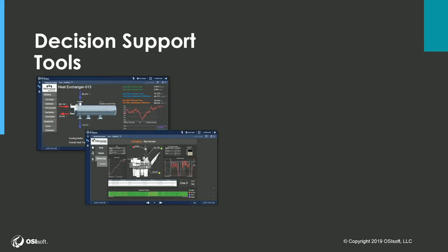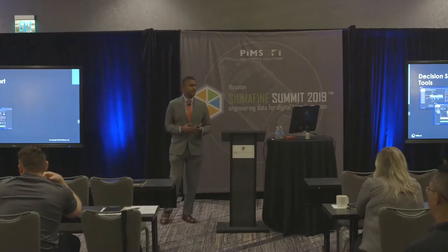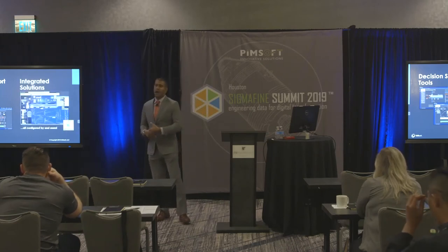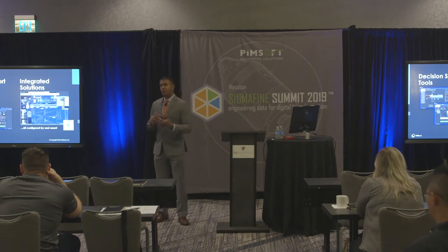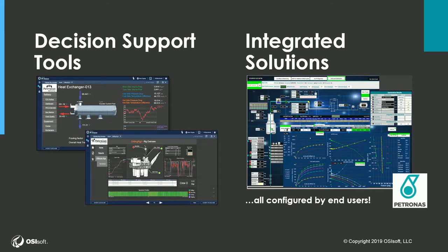Now that you have a good centralized data hub in Pi AF, you can leverage it with Pi Vision — our browser-based collaborative visual tool. You can use it for building dashboards and screens for operational intelligence, and take advantage of exception-based reporting, collections, templates, multi-states, and other visual capabilities. We can also integrate with other solutions and visual tools to provide richer displays. For instance, Petronas integrated Pi Vision with their Petroleum Experts PEDEX tools — GAP and Prosper — which are well and pipeline simulation visual tools. These are all configurable by end users, with no programming or coding required.